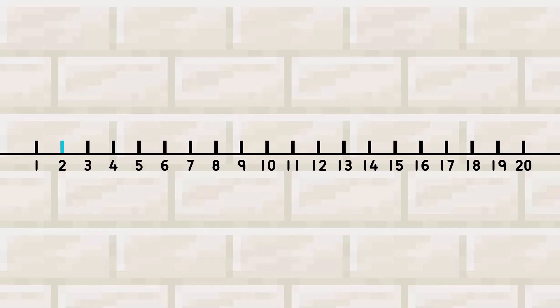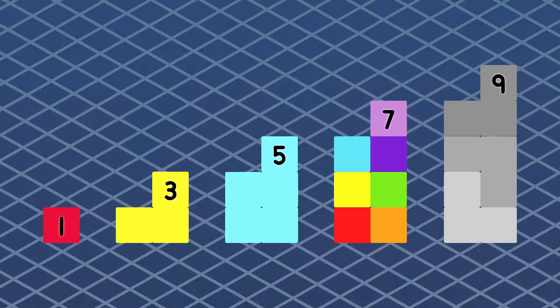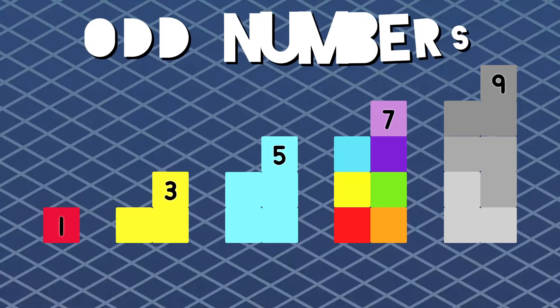2, 4, 6, 8, 10, 12, 14, 16, 18, and 20 are all even. When you split them in half you'll get 1 through 10.